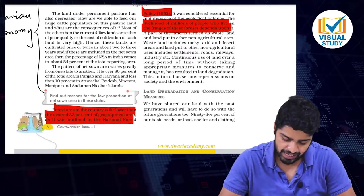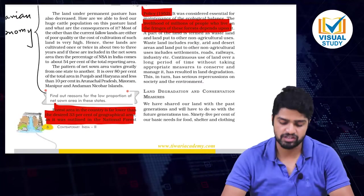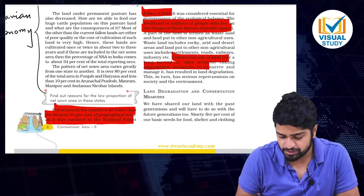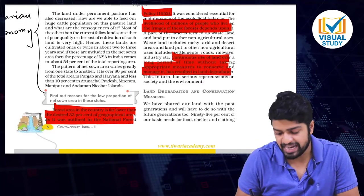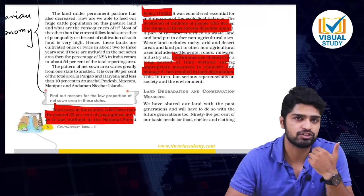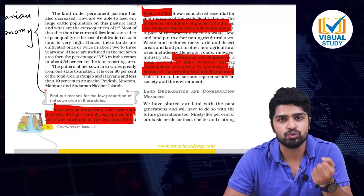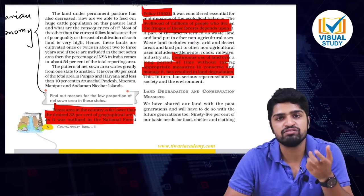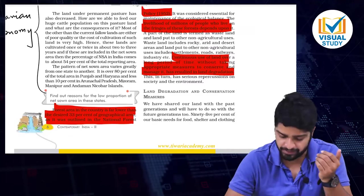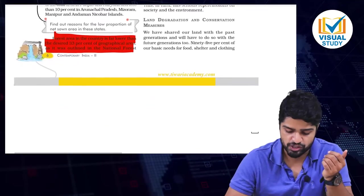Continuous use of land over a long period of time without taking appropriate measures to conserve and manage its health causes land degradation. The land loses its own fertility. If the same land is used repeatedly for agricultural purposes, it loses its original fertility and the land value becomes degraded.